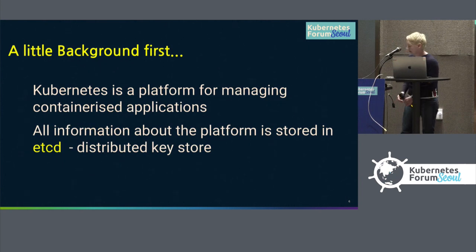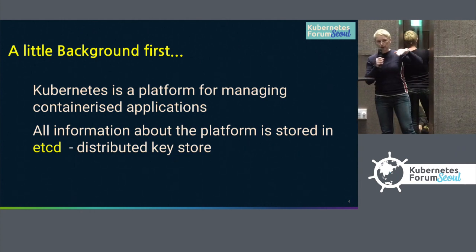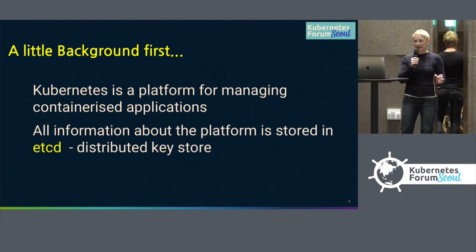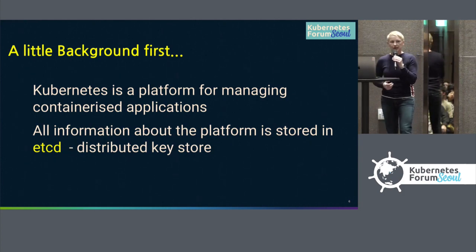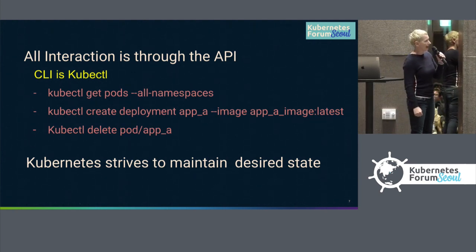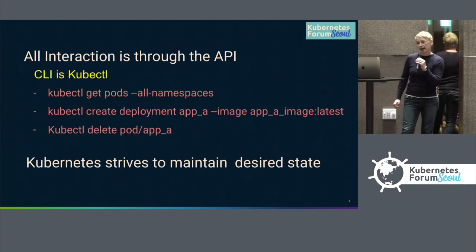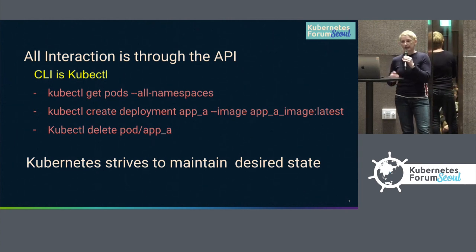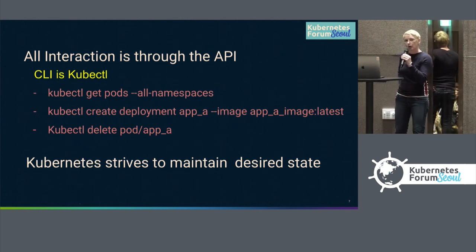Firstly, I just want to give a little bit of background about the elements of Kubernetes that we're going to be talking about today. Kubernetes is a platform for managing containerized applications, and all the information that Kubernetes knows about and holds is stored in the etcd database, which is a distributed key store. You can interact with that database and interact with Kubernetes all through an API. You cannot interact with Kubernetes other than going through the API. The command line to interact with the API is called kubectl, and with kubectl you can do various commands — getting information from Kubernetes or creating pods, deployments, and deleting them.